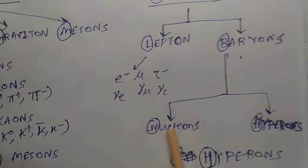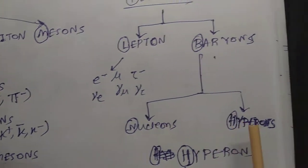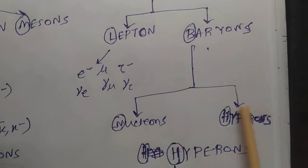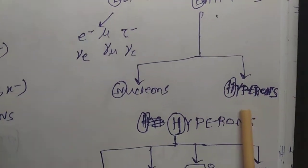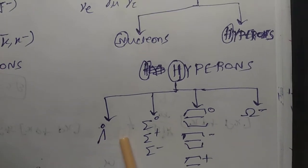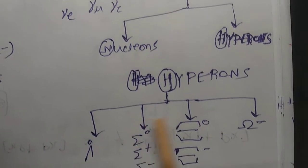You all know the classification of nucleons: they are neutron and proton. And what are the classifications of hyperons? There are four types of classification of hyperons: lambda zero, sigma, cascade, and omega.